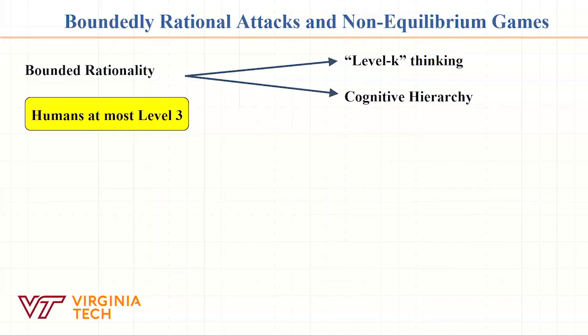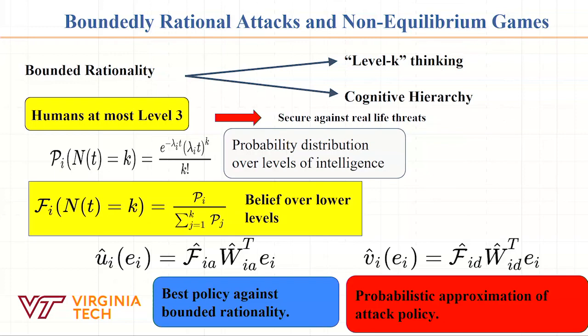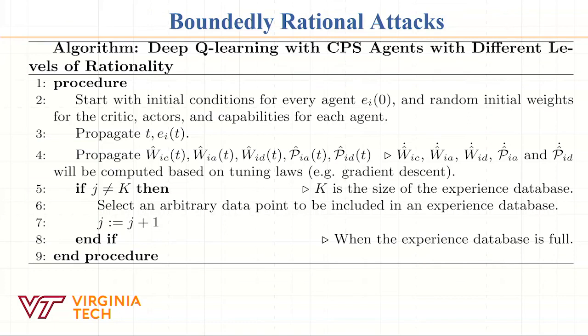This bounded rationality captures these scenarios, and in a cyber-physical system this is very important because most CPS are operated by humans or have humans in the loop. There is a pretty good trick on how to model different levels of intelligence by using Poisson distributions. We can use these Poisson distributions in the computations of our actor and critic frameworks. This is the final algorithm that combines all the things I described.